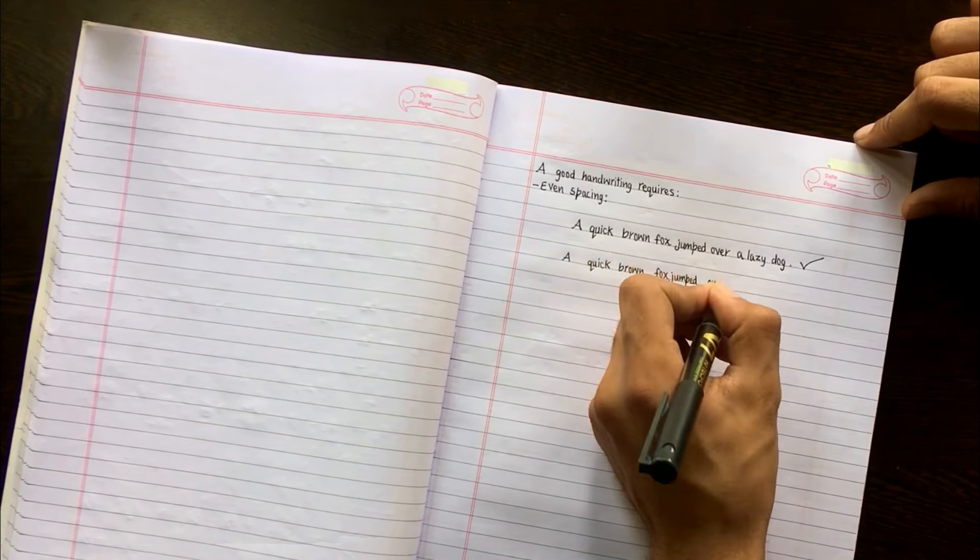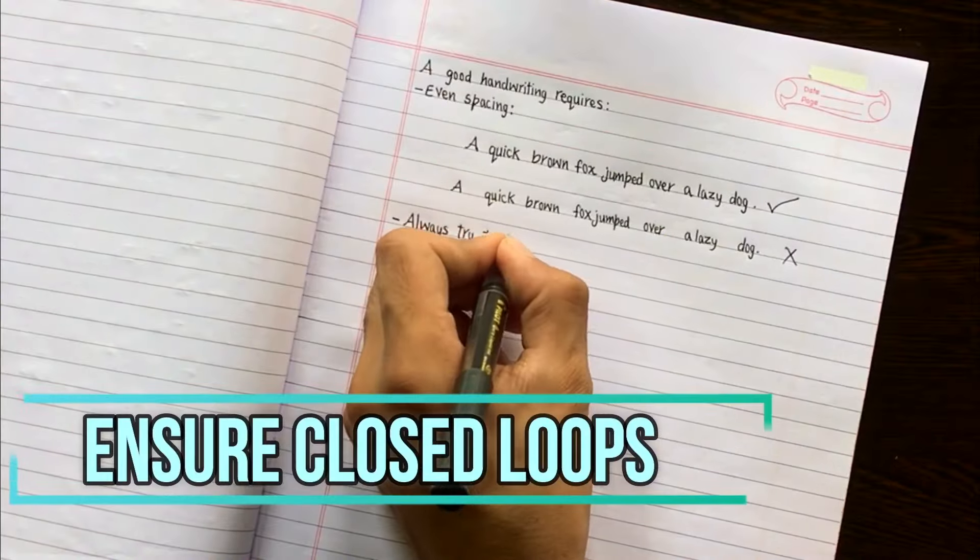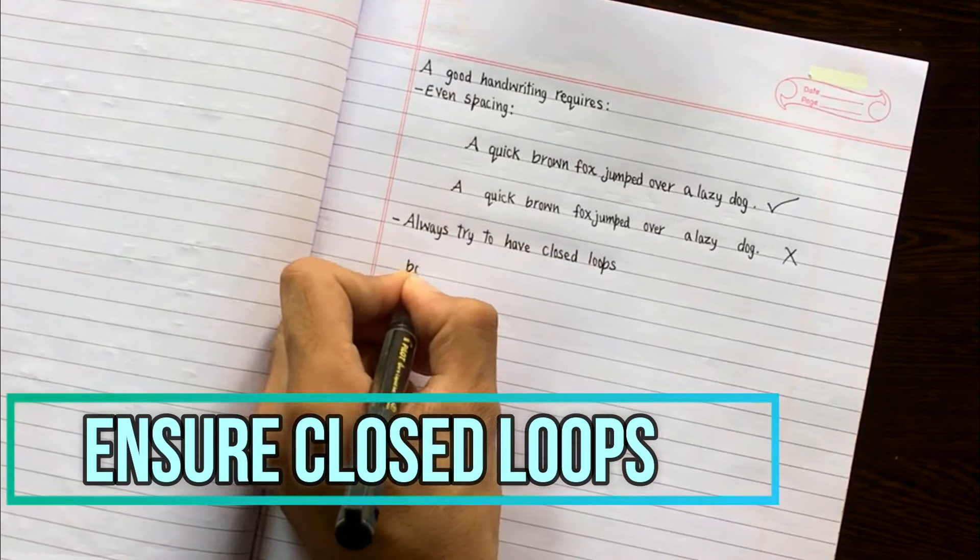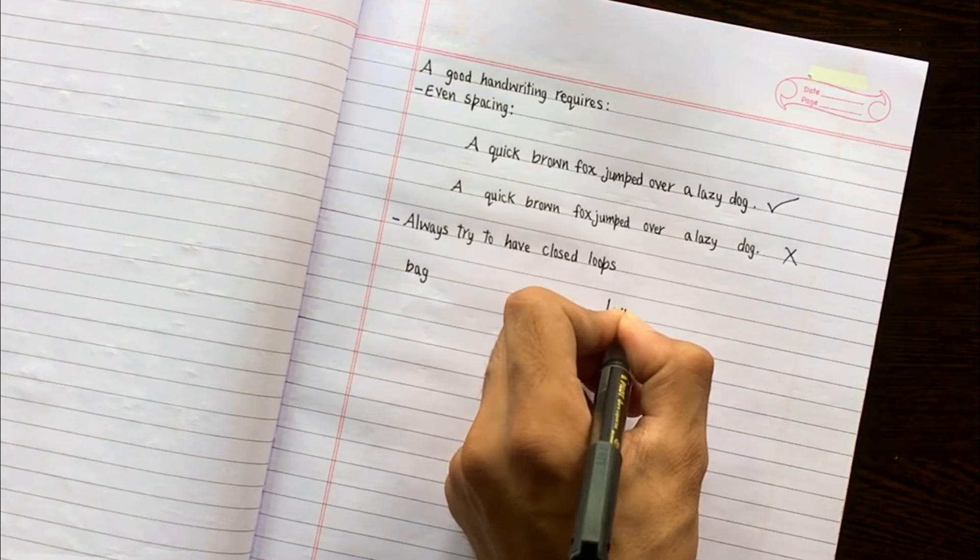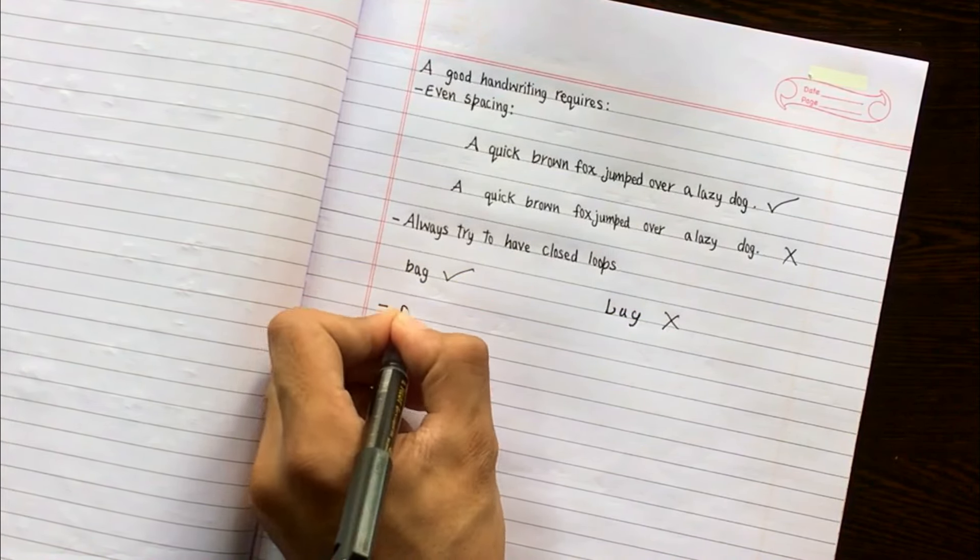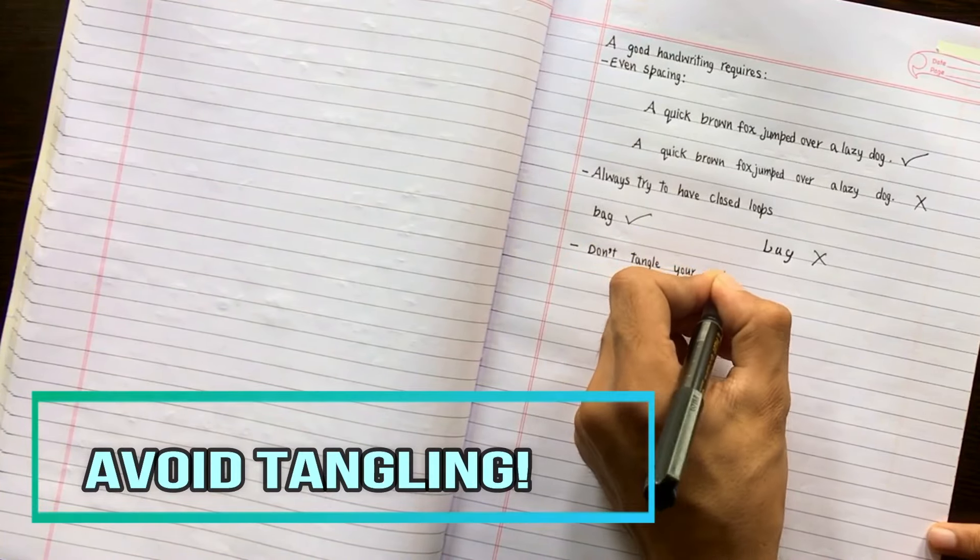After that, ensure to form closed loops with certain letters like 'g' so that others may not mistake it and read it as 'y.' Then don't tangle your sentences.